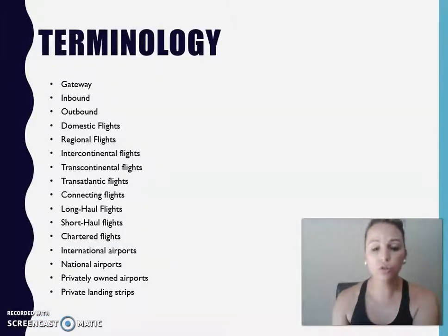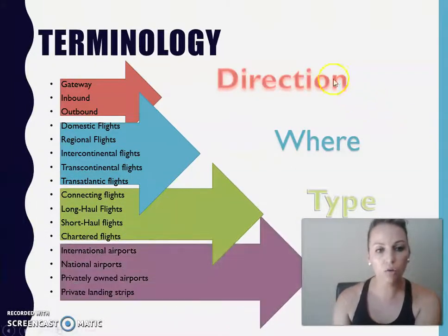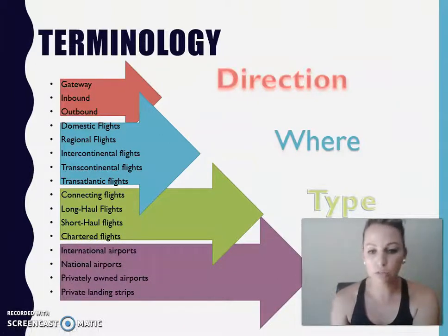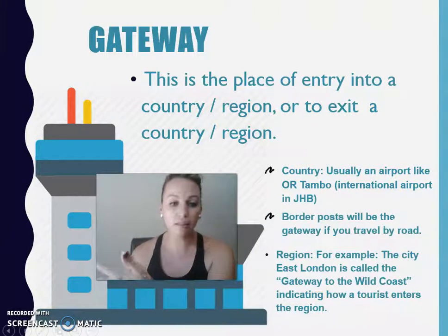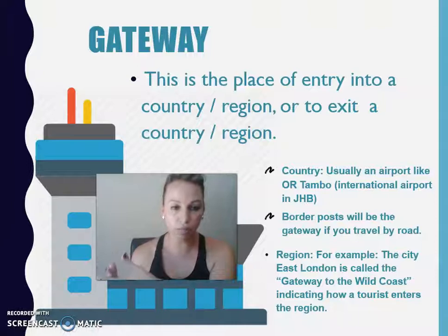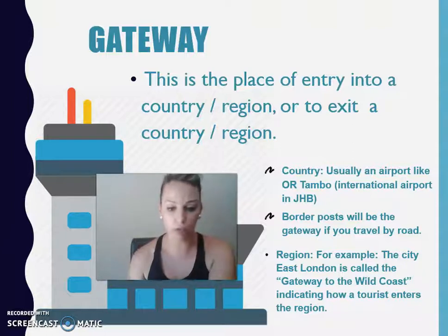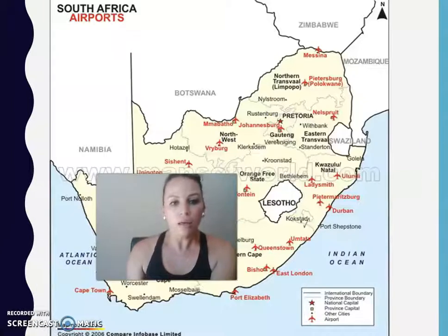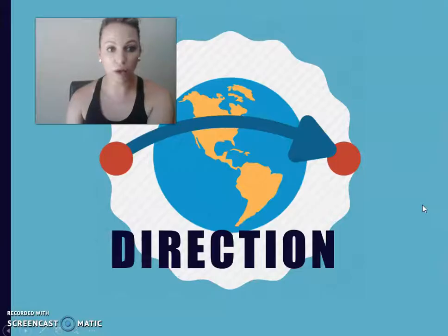We are going to cover quite a lot of terminology and concepts. You can fill in your worksheet as we go along. A gateway is a place of entry into a country or into a region. In this chapter on air travel, we will mostly focus on international airports or national airports in South Africa. Here's a map showing where all the airports are located in South Africa, and your teacher will go through the different types of airports with you.